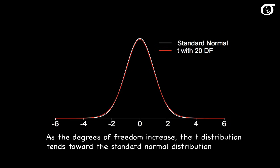I've stopped it here at 20 degrees of freedom, and the curves might look close, but if we looked very closely we would see that the t-distribution still has slightly heavier tails and a slightly lower peak. But if those degrees of freedom continue to increase, the t-distribution is going to get closer and closer to the standard normal distribution.